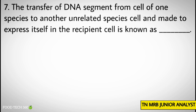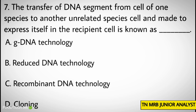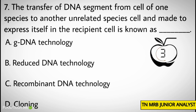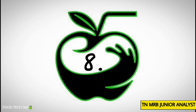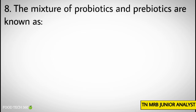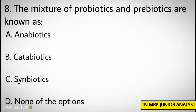...B) Reduced DNA technology, C) Recombinant DNA technology, D) Cloning. Correct answer: C) Recombinant DNA technology. Question number eight: The mixture of probiotics and prebiotics is known as? Options: A) Antibiotics, B) Catabiotics, C) Symbiotics, D) None of the options. Correct answer: C) Symbiotics.